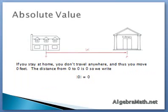Example: if you stay at home, you don't travel anywhere, and thus you move zero feet. The distance from zero to zero is zero, so we write the absolute value of zero is zero.